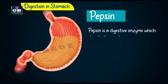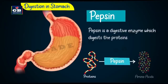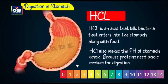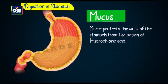Pepsin is a protein-digesting enzyme. The medium of the stomach should be acidic for the proper action of pepsin, so the medium is made acidic by hydrochloric acid. HCl is a strong acid that can cause damage to the stomach walls. A thick layer of mucus protects the walls of the stomach from the action of HCl.